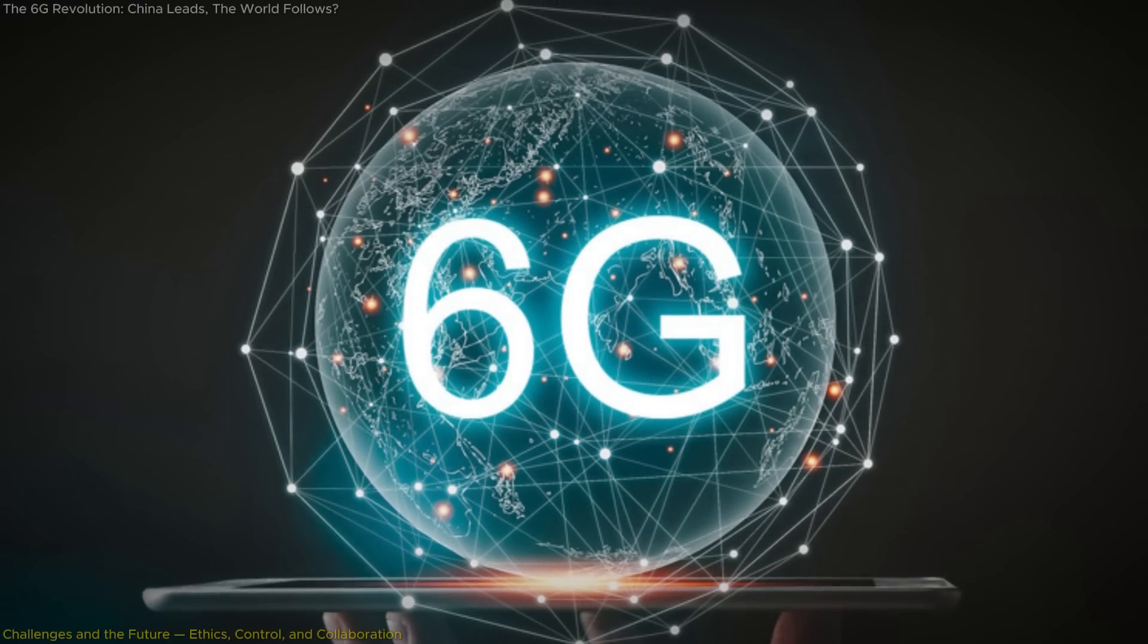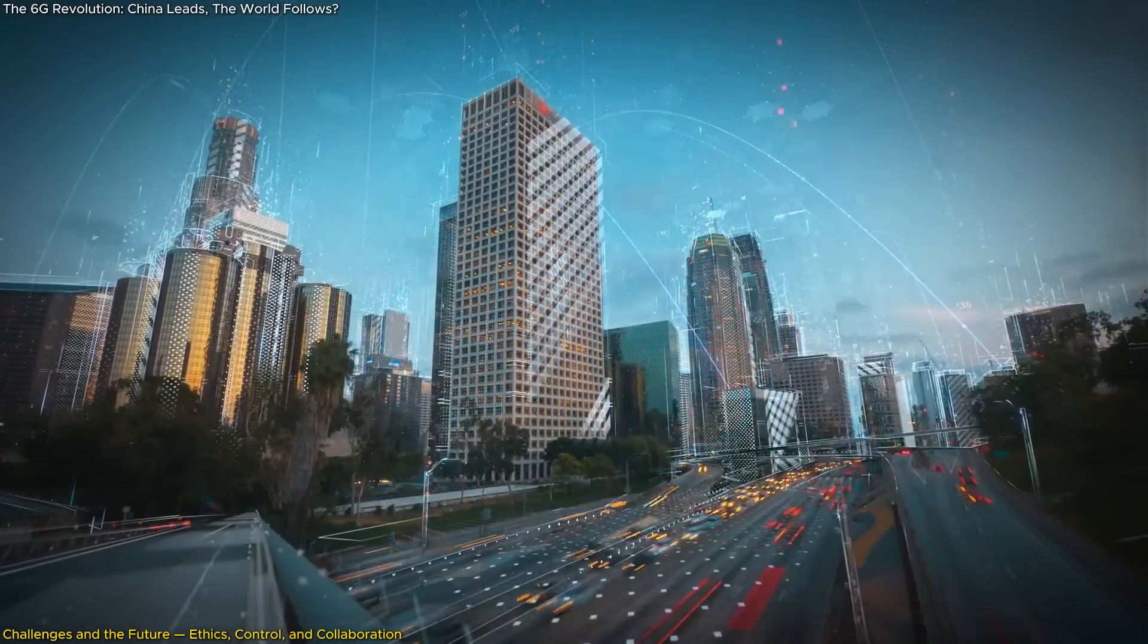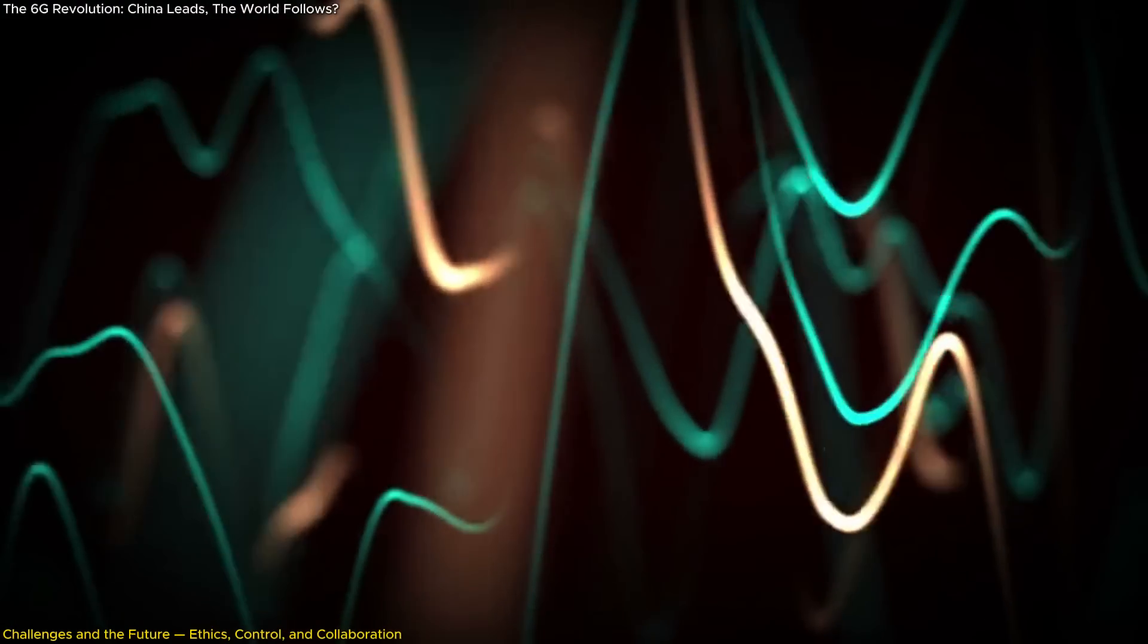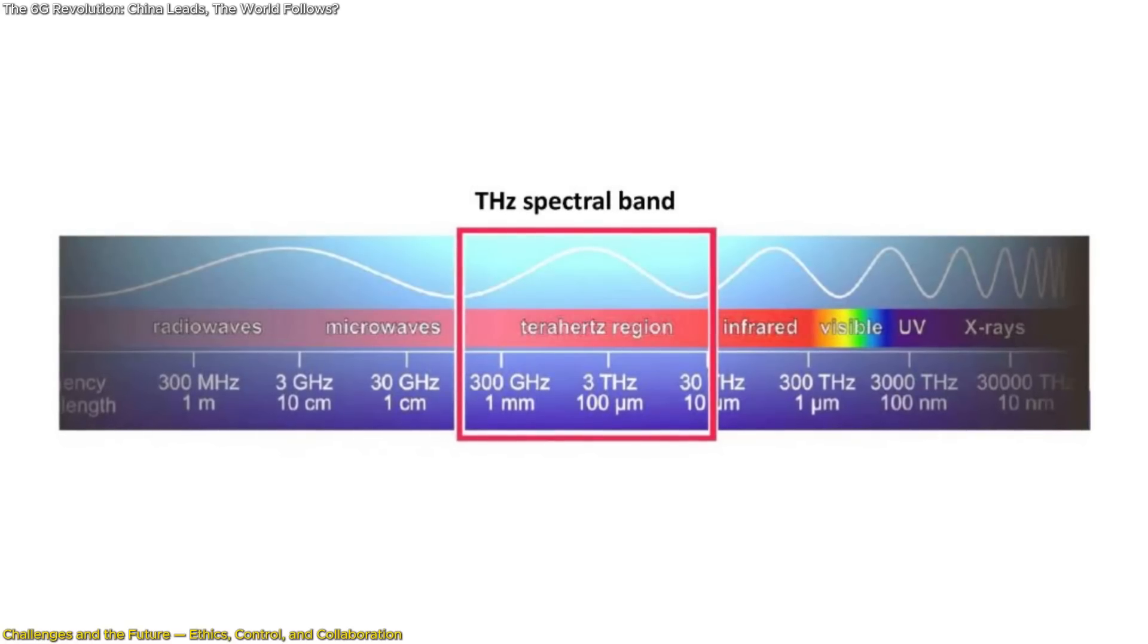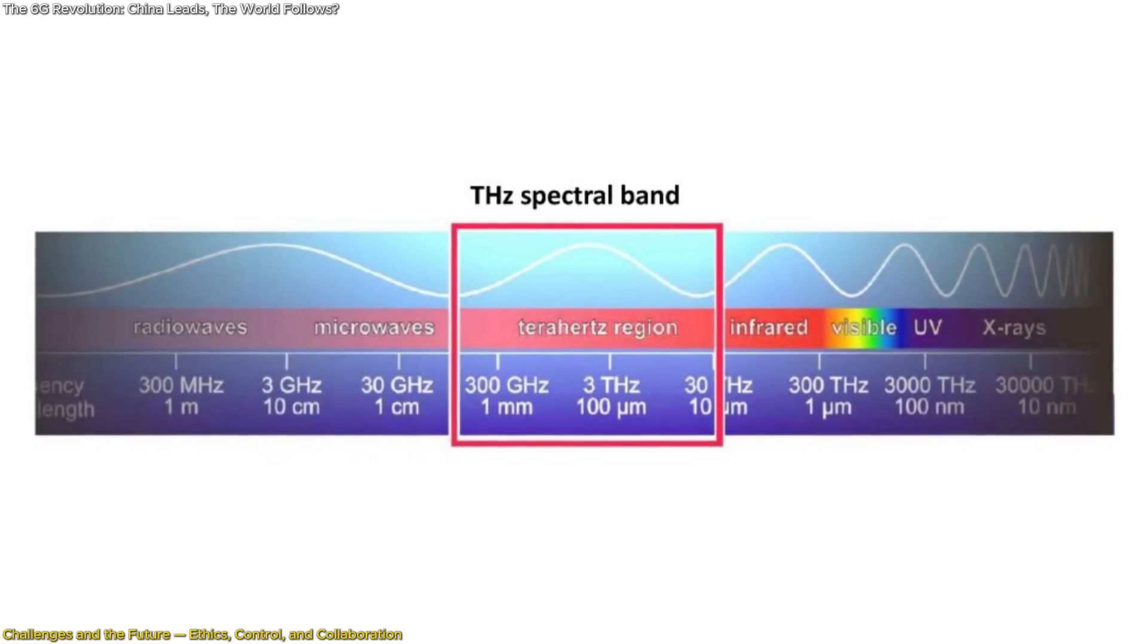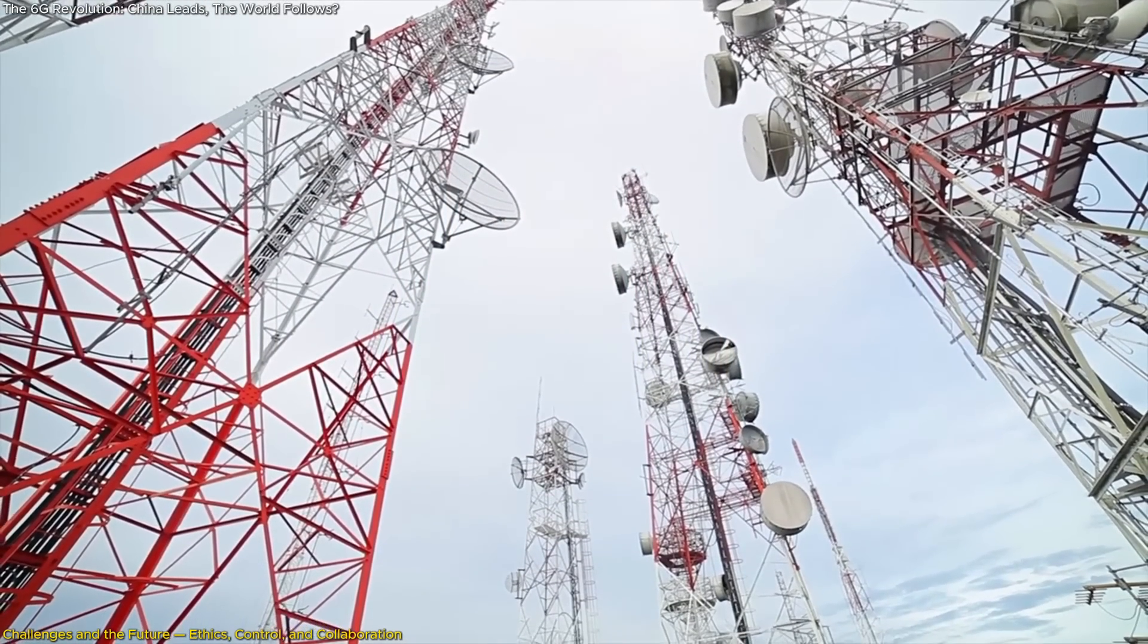While 6G holds enormous promise, it also opens the door to profound challenges. Let's start with the technical hurdles. Operating in terahertz frequencies isn't easy. Signals at this level have extremely short range and are easily disrupted by walls, water, and even air.